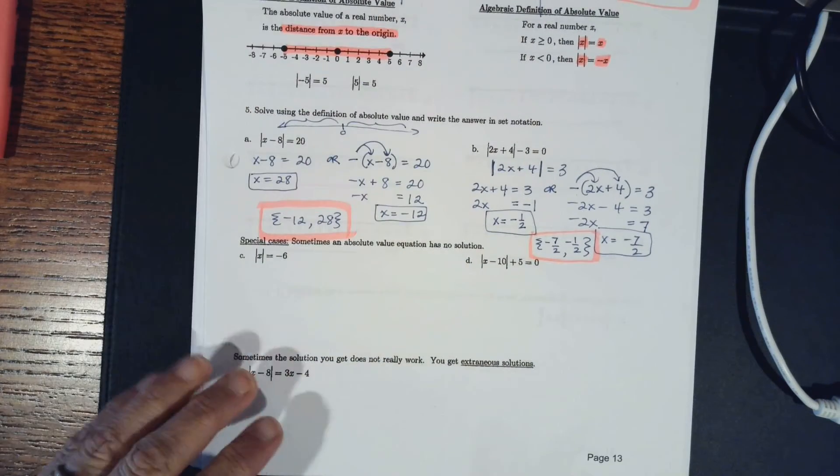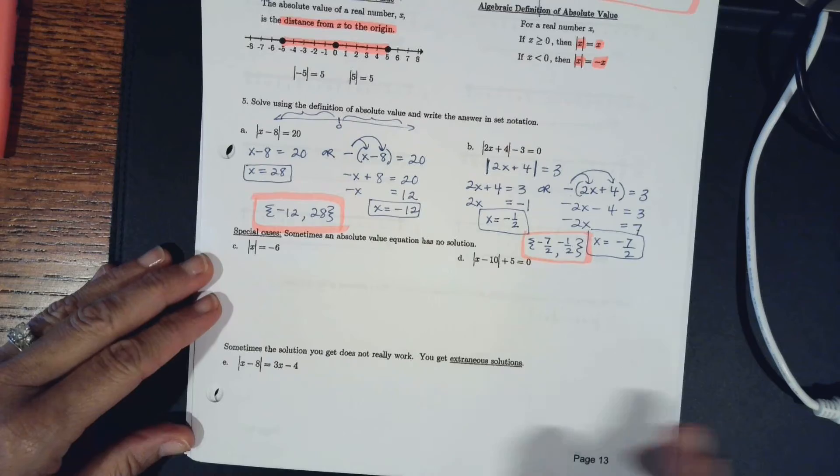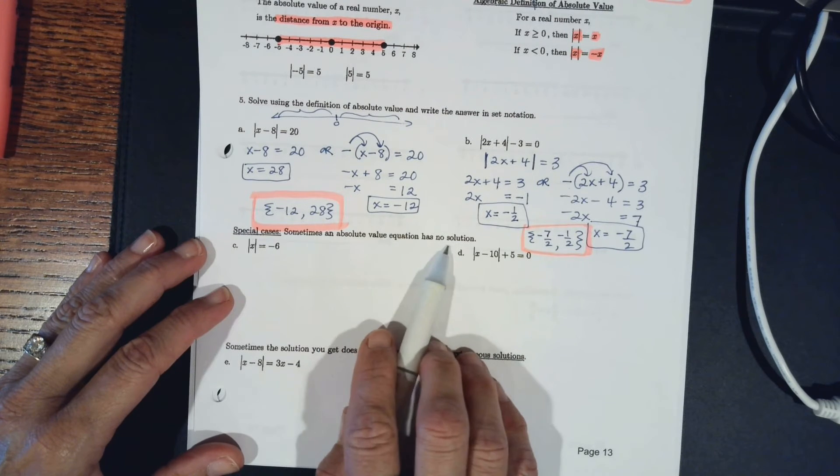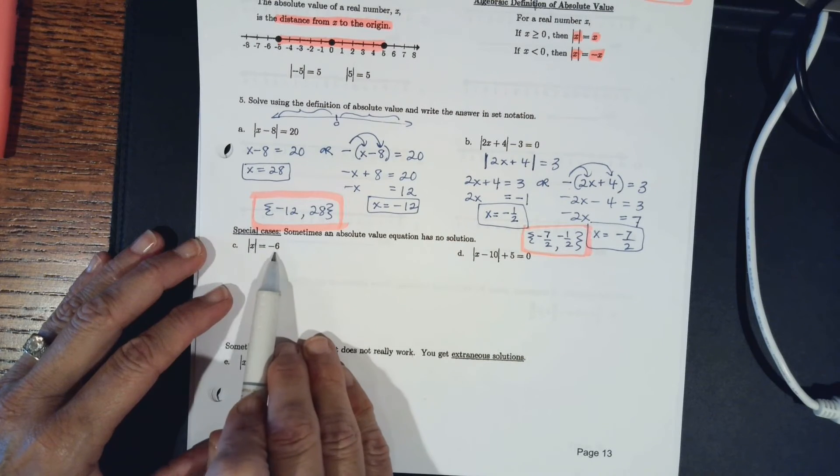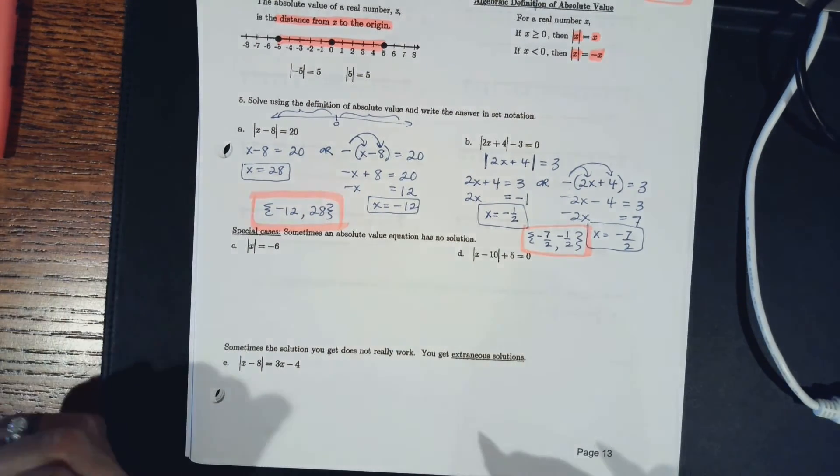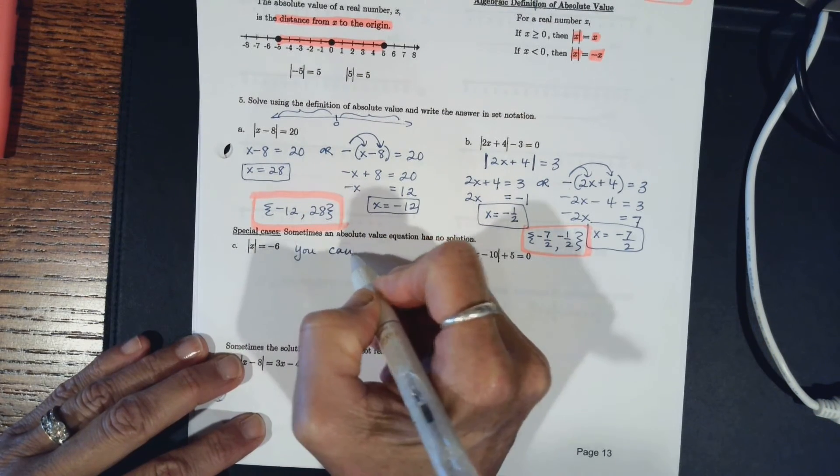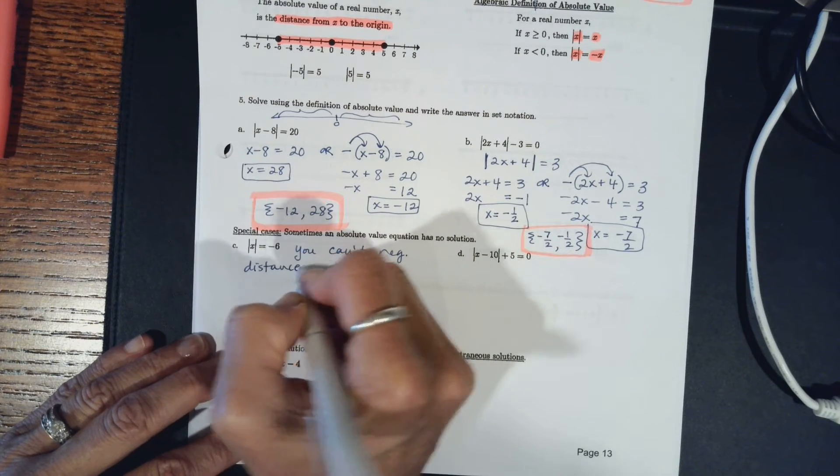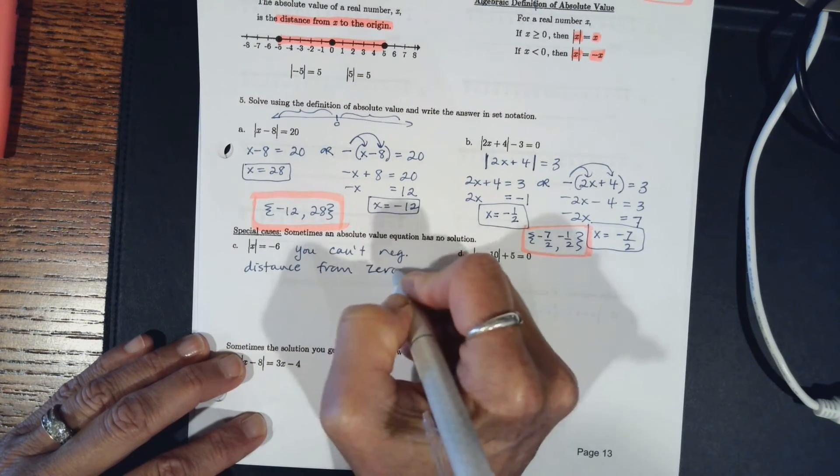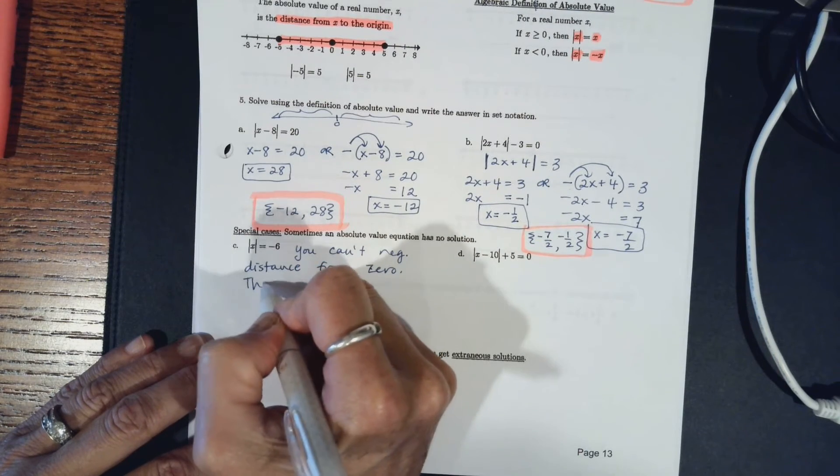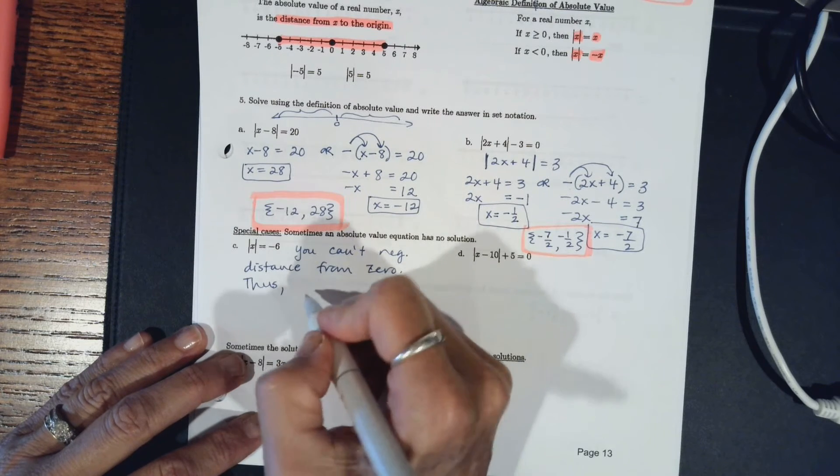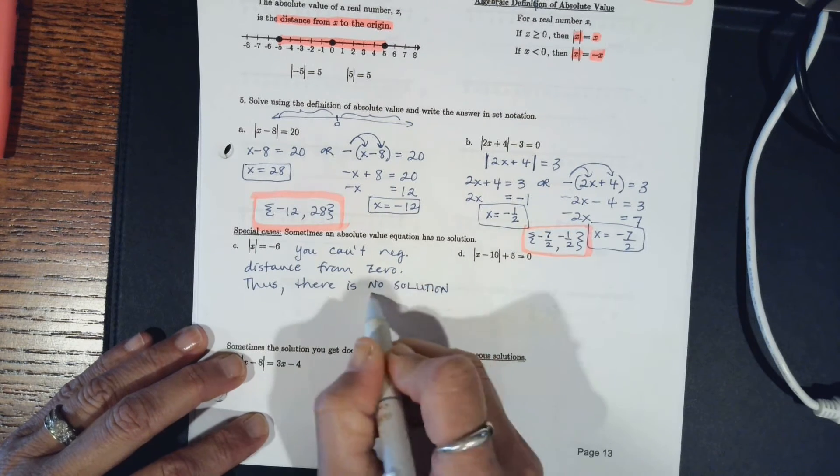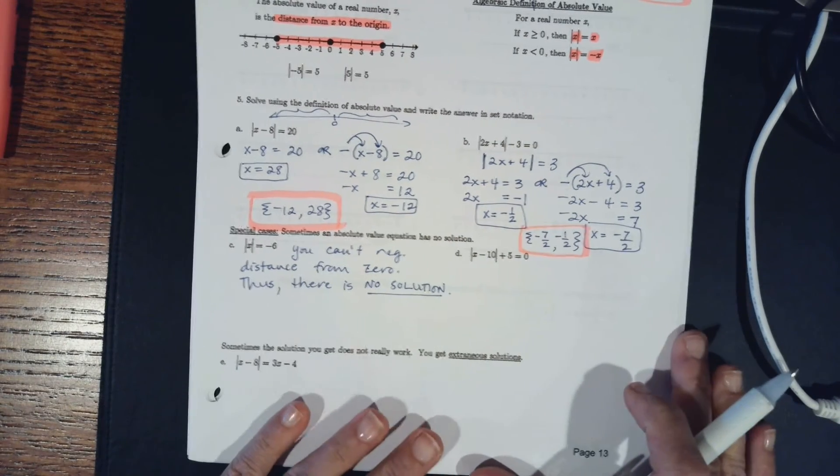So that's two examples. Now we have some special cases. In the case where there are a couple things that have no solution, right here it says negative 6, the absolute value of x equals negative 6. We don't have any absolute value less than 0. You can't have negative distance from 0. That's what the definition of those bars are. Thus, there is no solution to this. So if you have absolute value equal to a negative, that is no solution.